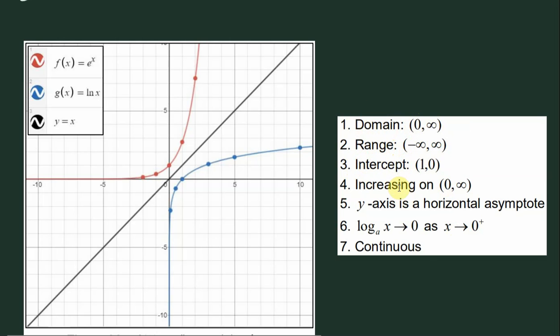The range is from negative infinity to positive infinity and the intercept is (1,0). As you can see in the graph, the intersection on the x-axis is at (1,0).